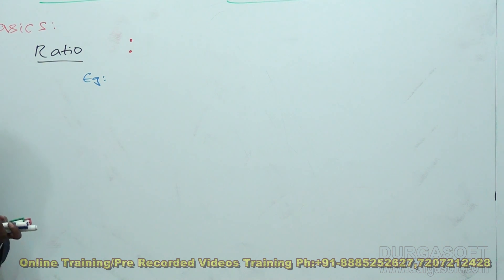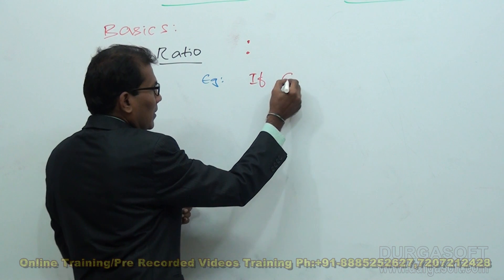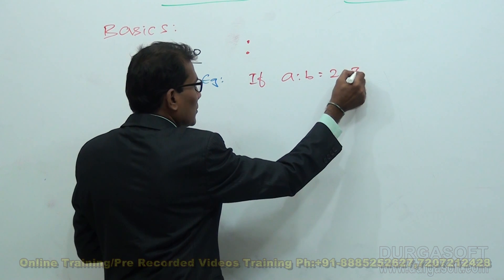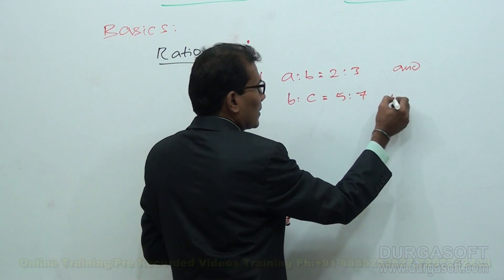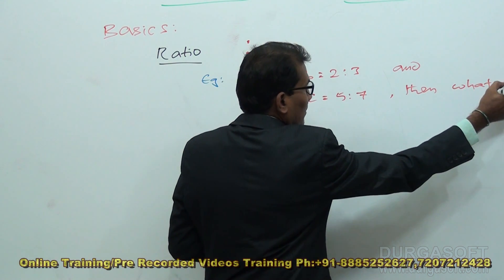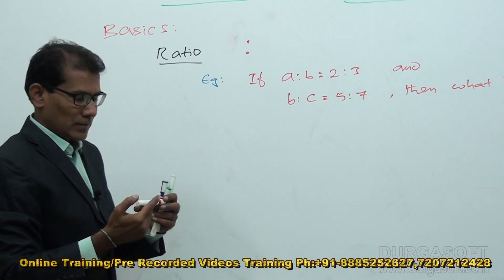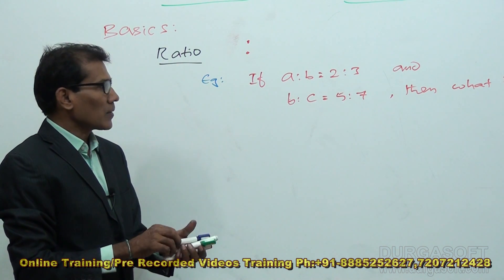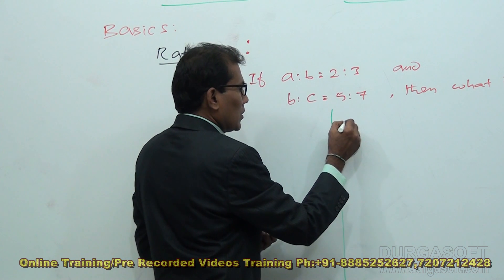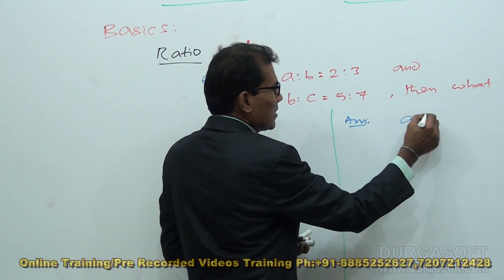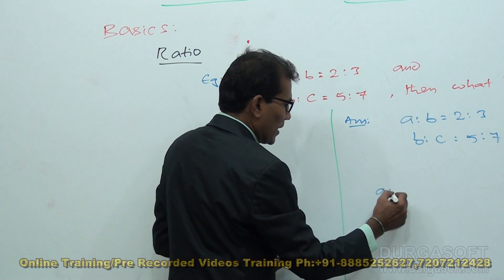Let us take one example to see what types of questions and applications of ratio are important. Here is a question: if A is to B equals 2 is to 3 and B is to C equals 5 is to 7, then what is A is to B is to C? A is to B is 2 is to 3, B is to C is 5 is to 7 — find A is to B is to C.